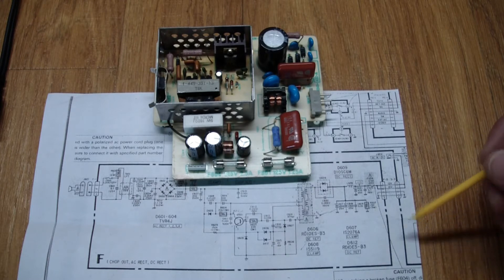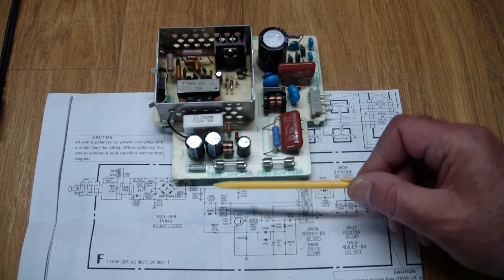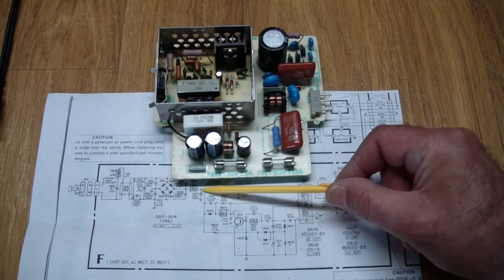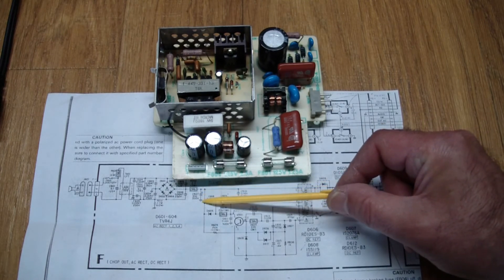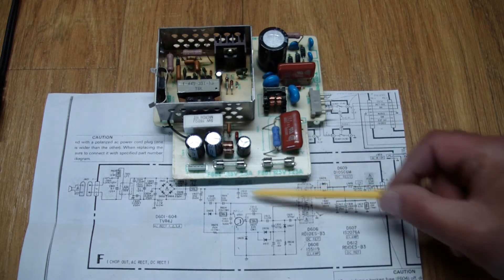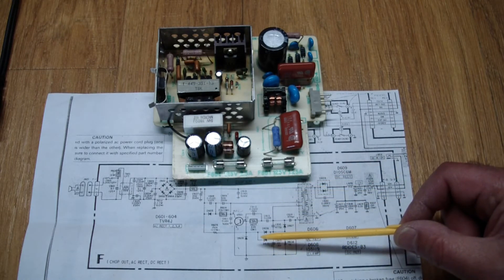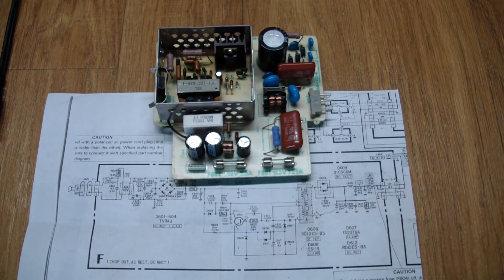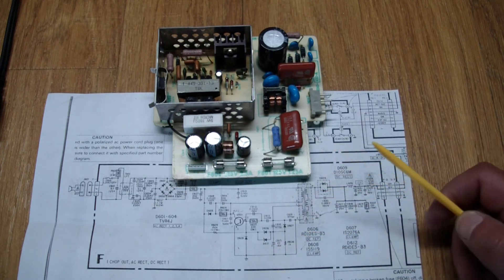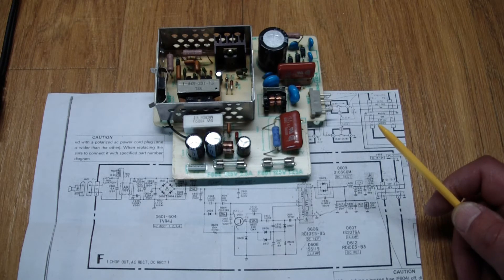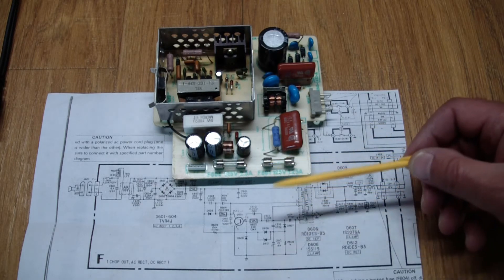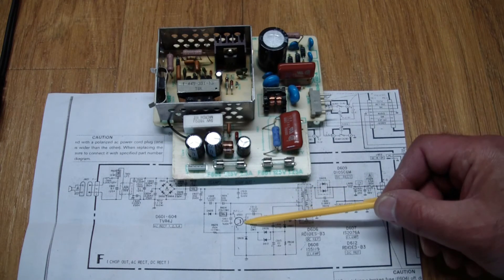And I started looking at paths to ground from here, alternate paths to ground. This is that capacitor, and there are several possibilities in here. But another very common thing going bad in these supplies is that the switching transistor over here that generates the PWM will short.